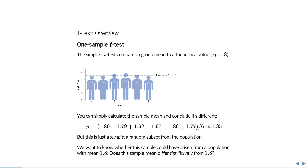But remember, this is just a sample — a random subset of the population of males, and in reality there are many more males than just these six. So is this a coincidence, or are males actually larger than 1.85 meters on average? Could this sample have arisen from a population with mean 1.8 meters? Does this sample mean differ significantly from our theoretical value? This is what we want to know.